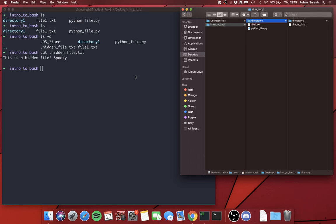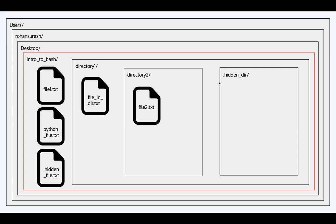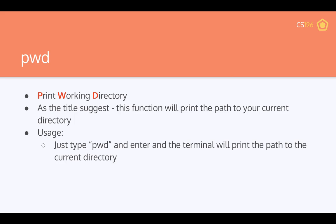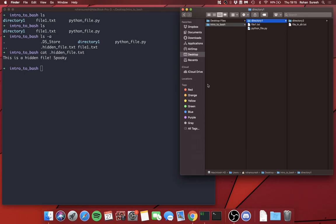The next command is `pwd`, or 'print working directory'. As the name suggests, this function prints the path to your current directory. Usage is simple: you just type `pwd` and enter, and the terminal prints the full path to the current directory.